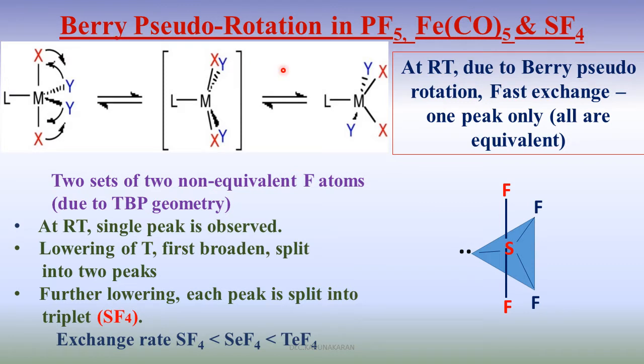Here we will study what are flexional NMR molecules. These flexional molecules are molecules that undergo dynamics, constantly exchanging their positions. For example, PF5, SF4, these are all trigonal bipyramidal geometries.